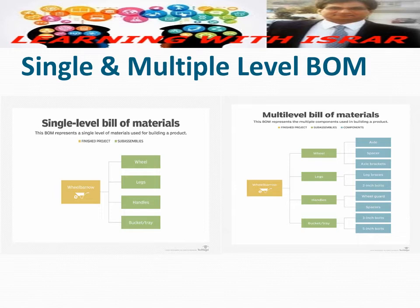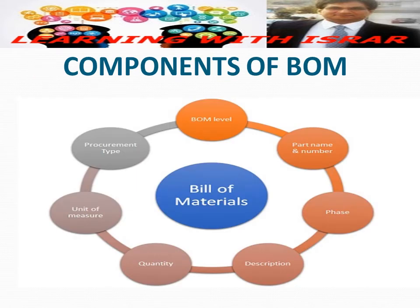Bill of Materials can also be categorized according to different levels. A single level Bill of Material is used for products that are simple in structure and have no sub-assemblies, recorded in part numbers and orders. A multiple level Bill of Material is used for more intricate products and incorporates sub-assemblies that are further broken down into additional sub-assemblies. In this type, each part — whether a raw material or work-in-process — must connect with a parent item at the top level.